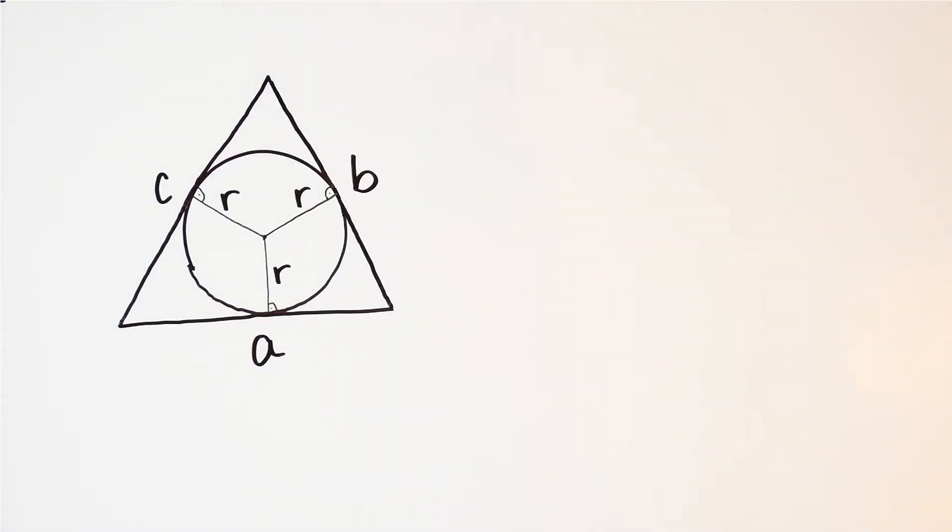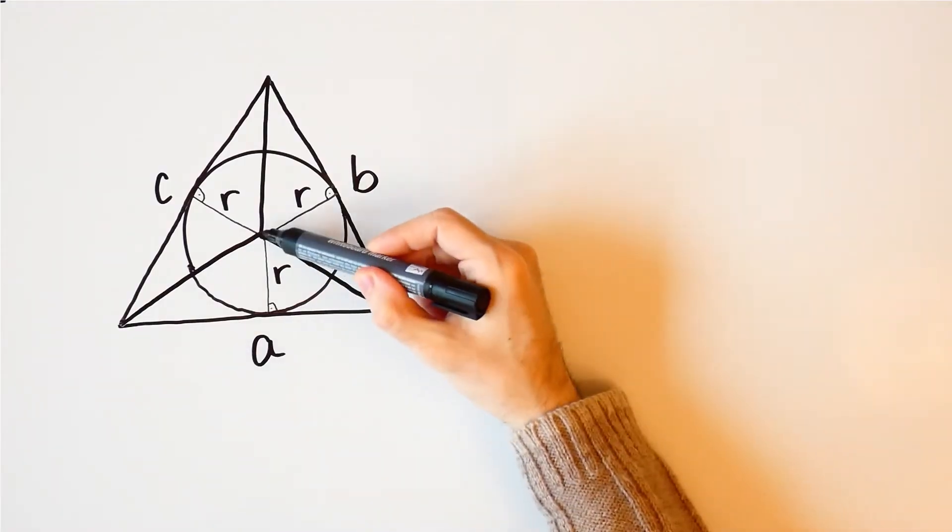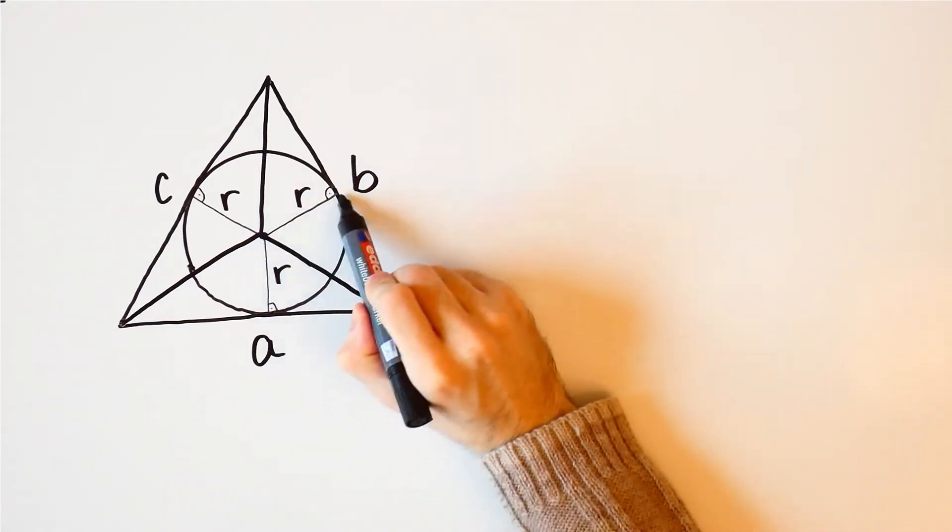If we divide the triangle into three smaller triangles like this, then r is the height of each of those three smaller triangles.